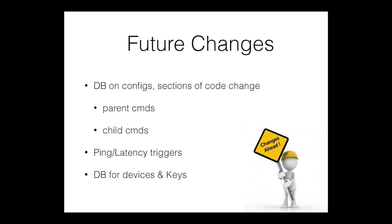Lastly, when I make a change on the network, I go 'int lo0' and then 'IP address blah blah.' Right now it reads it as two separate lines and doesn't connect them at all. In the future I'd like it so the command has a parent command of the interface, and then the IP address would be the child command, so they're linked — because right now you can add an IP address to a router and not know what interface it is.